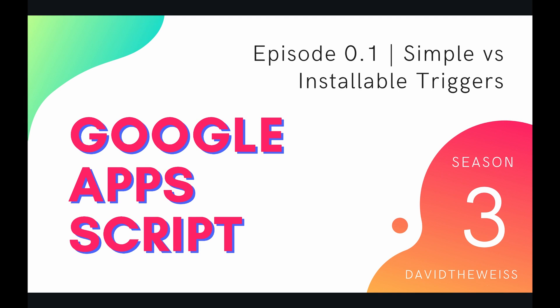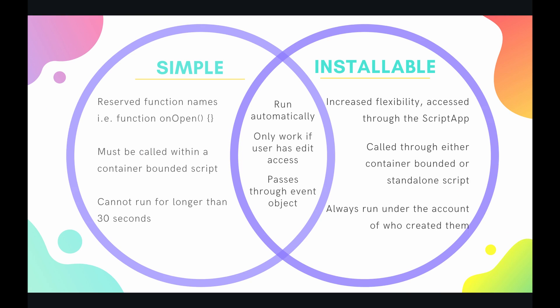Hey coders, and welcome to episode 0.1 of our Script Service playlist on the Google Apps Script course. This video is going to further elaborate on triggers and elucidate the difference between simple and installable triggers. I've created this Venn diagram to compare and contrast. On the left we have simple triggers. These simple triggers are not technically underneath the Script App themselves, but since they are triggers, I thought I would include them within this playlist.